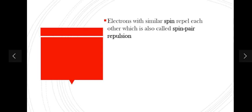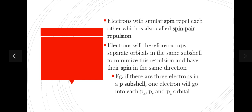What happens if we have electrons with similar spin? For example, if two electrons both rotate in a clockwise direction — those electrons with similar spin will repel each other. This is also called spin pair repulsion. To minimize this repulsion, electrons will occupy separate orbitals in the same subshell. Their main goal is to minimize this repulsion.